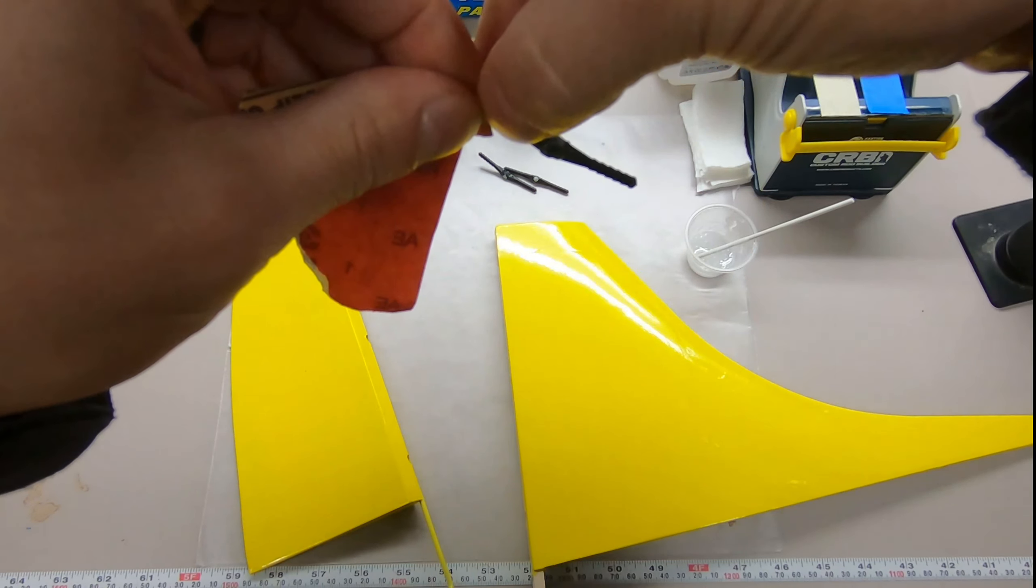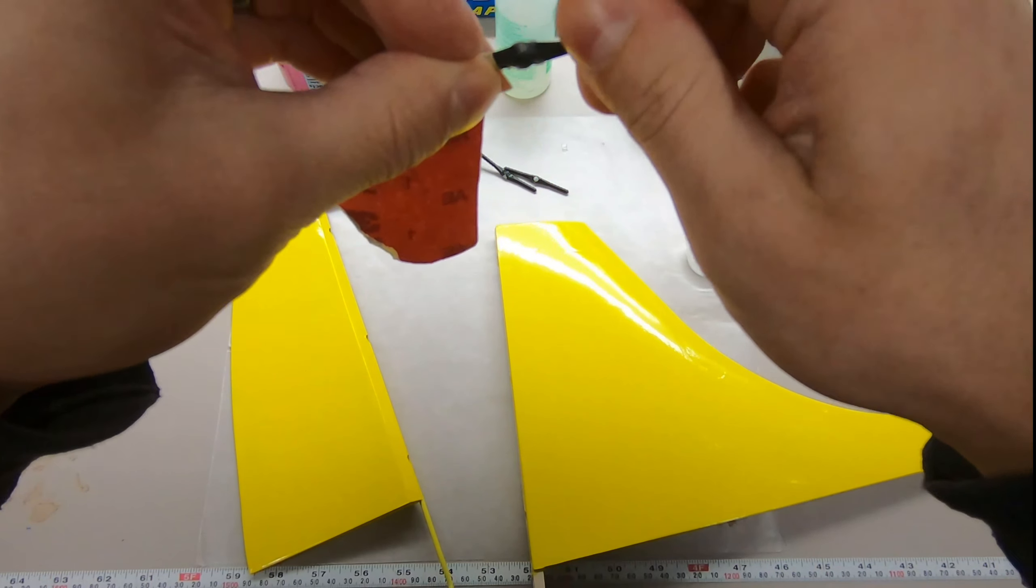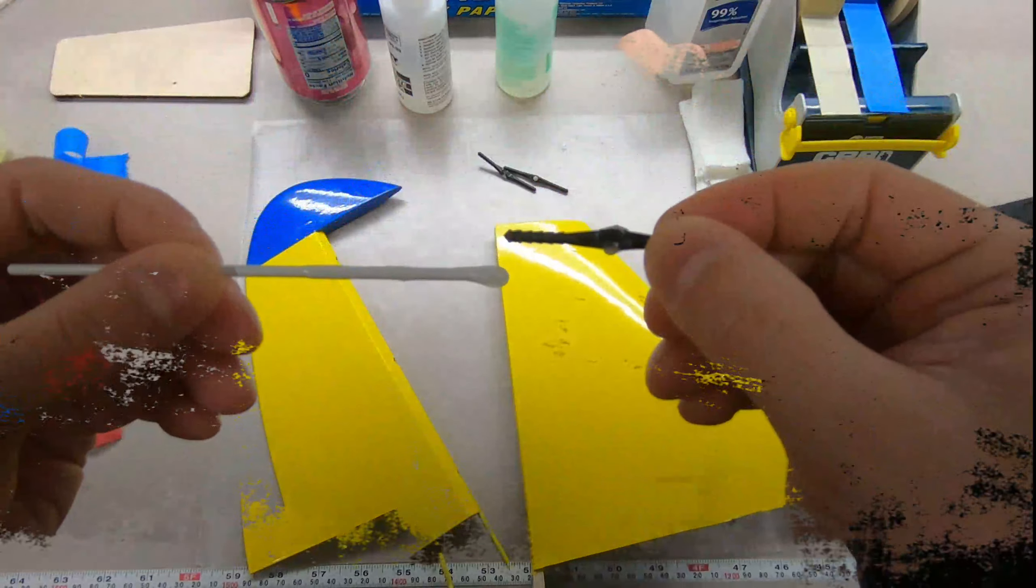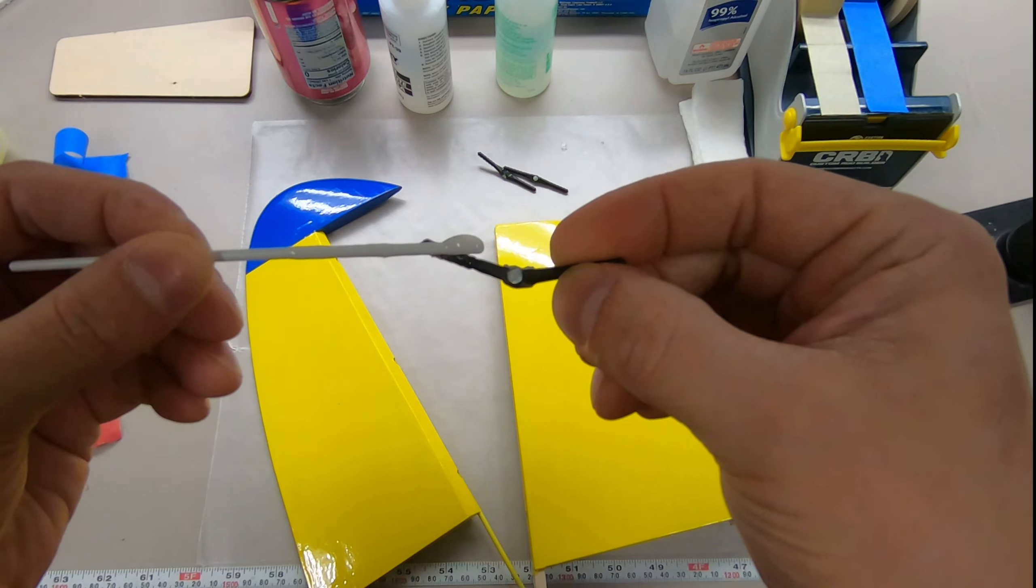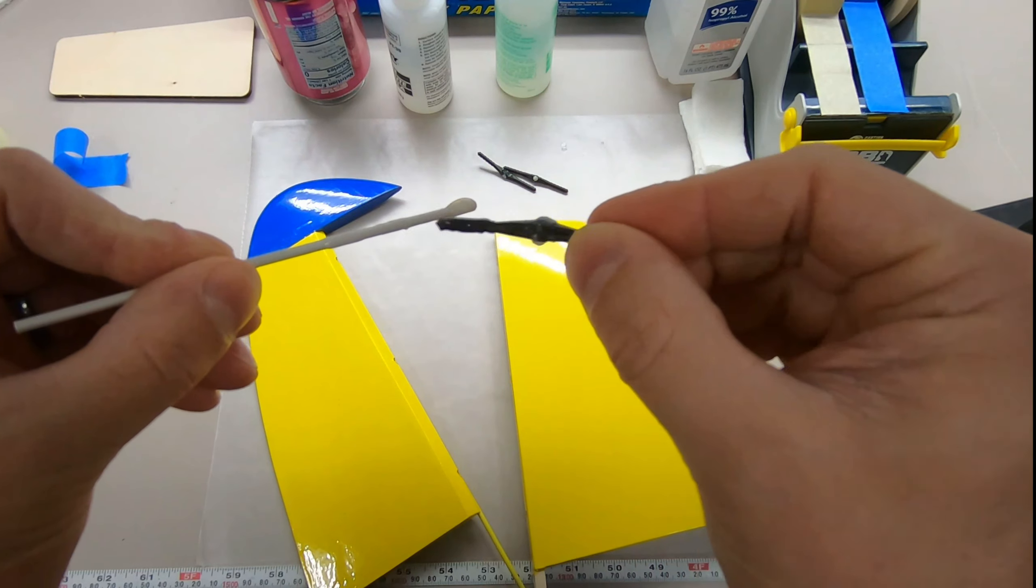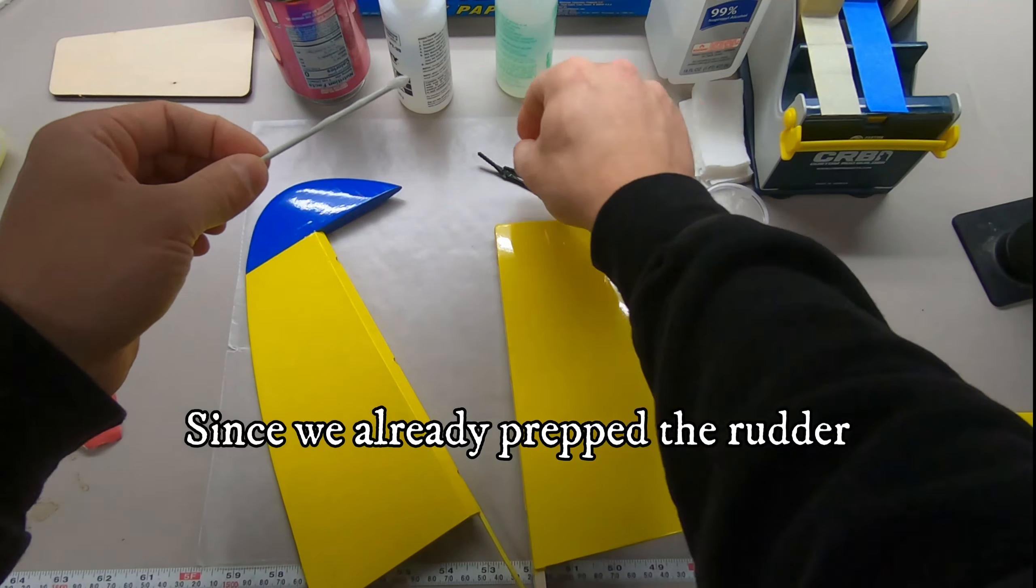More rough surface area it has, the better bond you're going to get. All right, a little tiny rub on here. Wipe it off. Don't want much on there at all, just enough to let you know there's some there.